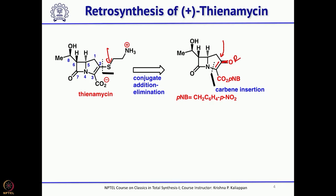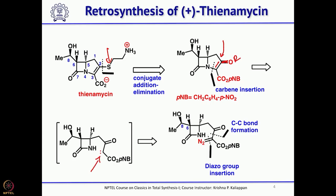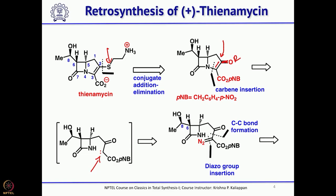The key reaction was introduction of the C–N bond and formation of the 5-membered ring through carbene insertion. When you talk about carbene insertion, the precursor is the corresponding diazo compound. The diazo compound can be easily prepared from the beta-ketoester: treat with base and then tosyl azide to introduce the diazo group.